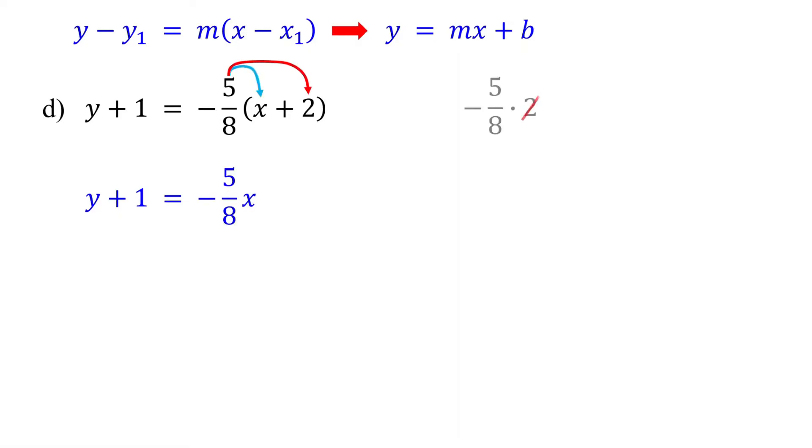You can reduce 2 and 8 by dividing each by 2, which leaves you with negative 5 fourths. Then, isolate Y by subtracting 1 from both sides. On the left, these cancel, leaving Y. On the right, you need to subtract 1 from negative 5 fourths.